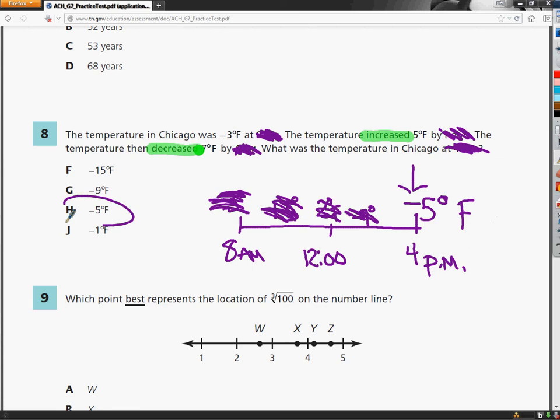Then I do 2 minus 7, which knocks me all the way down to negative 5 degrees Fahrenheit. So it's right here. That question is not that difficult. There's just a lot of extra stuff in there that you don't really need. But if you make a little sketch or something, I'm sure that it'll be completely fine, and you shouldn't worry about it. The answer, of course, is H.